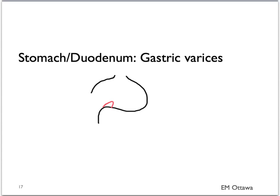Varices can also be found in the stomach, though this is less common. They are also due to cirrhosis and portal hypertension, and similar to esophageal varices, they can bleed very quickly as well.